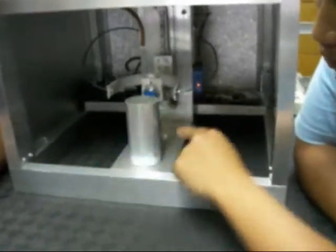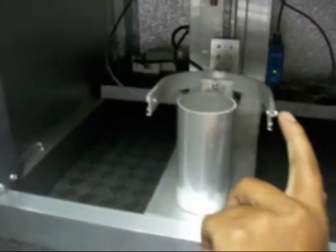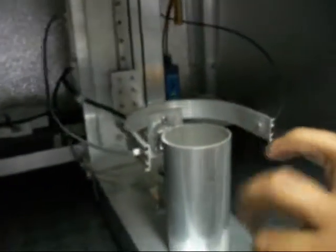It's sensed by the proximity sensor, then it goes down. When the fiber optic senses the height of the cup, it will stop there. Then the water will flow.